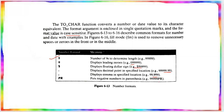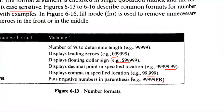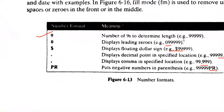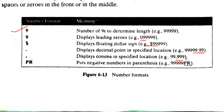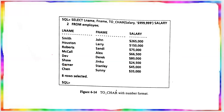Additional number formats include: PR for showing negative numbers in parentheses. So with different number format elements, you can control full length, leading zeros, floating dollar sign, decimal point notation, and comma notation in the TO_CHAR output.